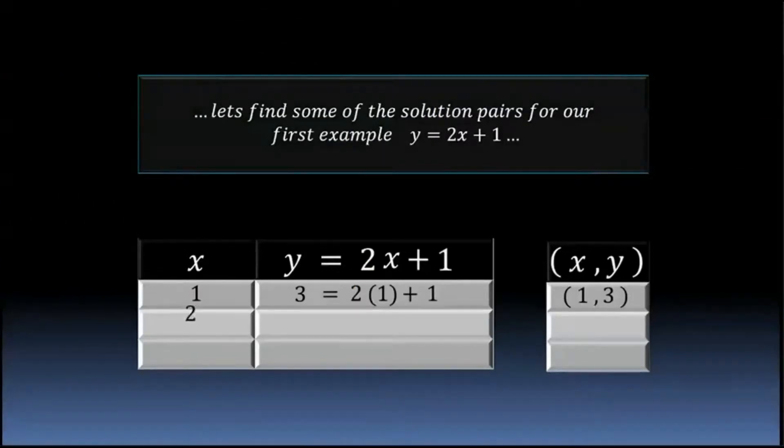We pick a new value for x, 2. We place x in the equation by 2, multiply it by 2, add 1, and our result will be the value 5. Our ordered pair, 2, 5.